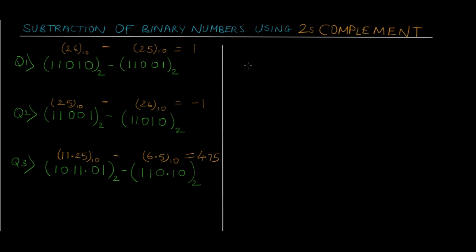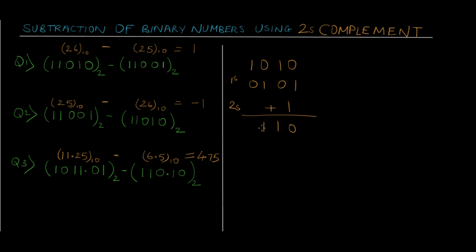You first need to know what 1's complement is — I've already put a video on 1's complement so you can check it out. Basically, 1's complement of a binary number is just the flipping of bits. So if you have a number 1010, the 1's complement would be 0101, and 2's complement would be 0101 plus 1, which gives us 0110.